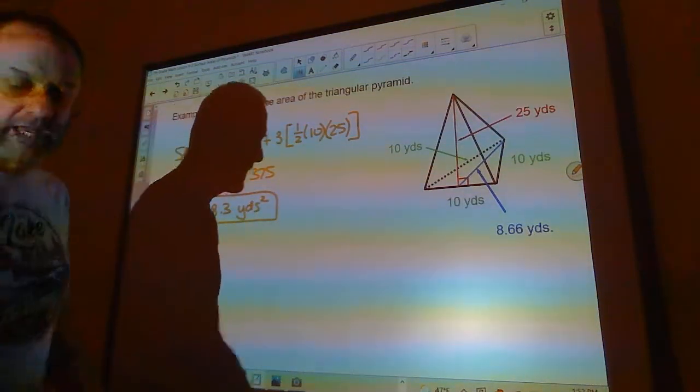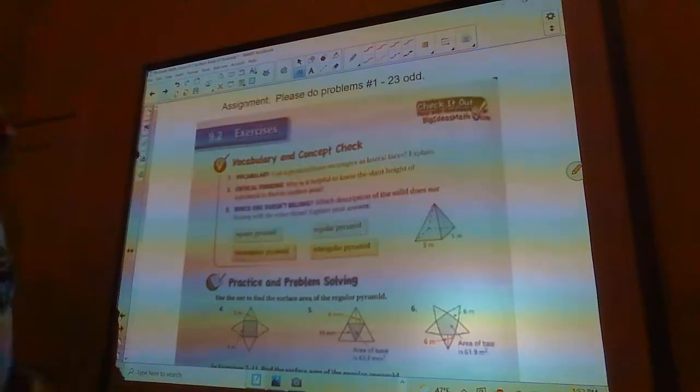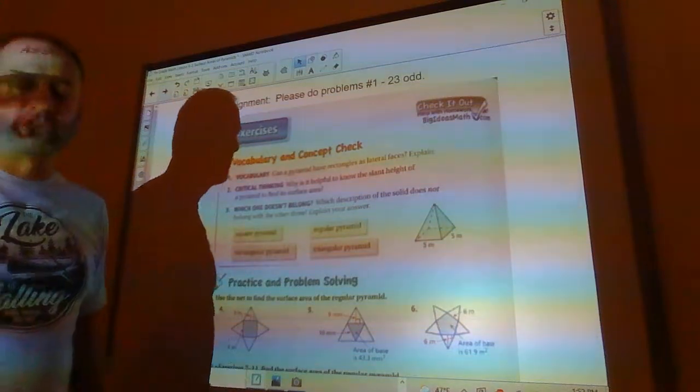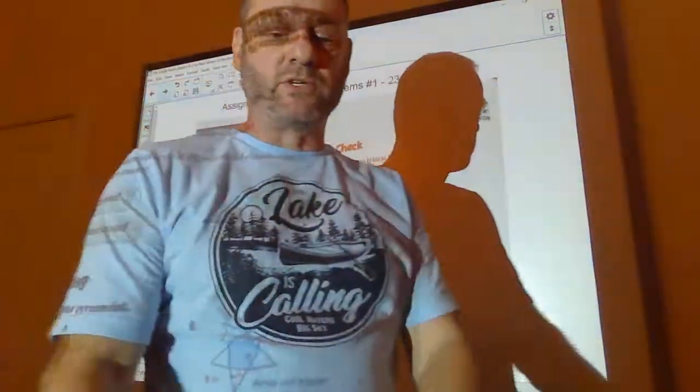Okay, so piece of cake. You get to do 1 through 23 odd. I told you this would be a short lesson. I'll see you guys in class.